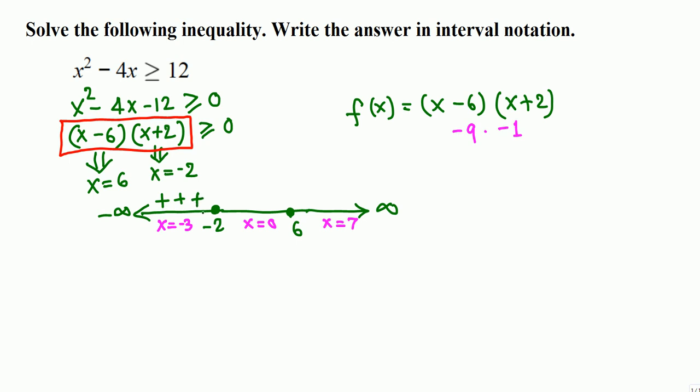And now we repeat the procedure. In this case we pick x equals 0. Plug in 0, 0 minus 6 is negative 6 times 0 plus 2 is 2. Negative 6 times 2, negative. So we get negative here, negative value. Doesn't matter how many negatives you write, just one.